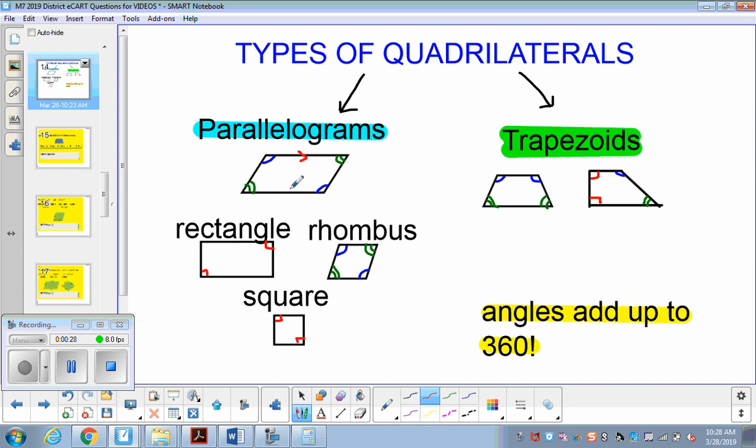So for parallelograms, the top and bottom, that's one set of parallel lines, and the other sides are also parallel. So this one has two sets of parallel lines, two pairs of parallel lines. Now with trapezoids, they only have one set, and right here in both my examples it's the top and bottom parallel sets.